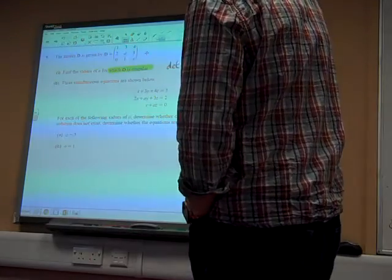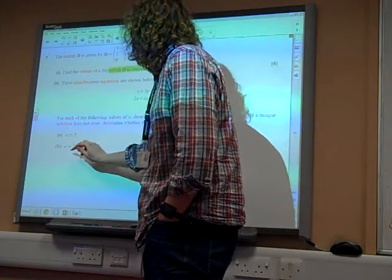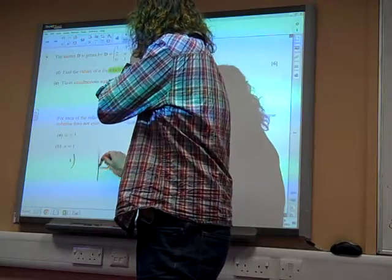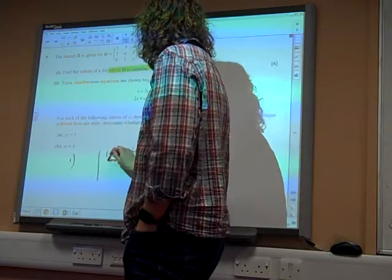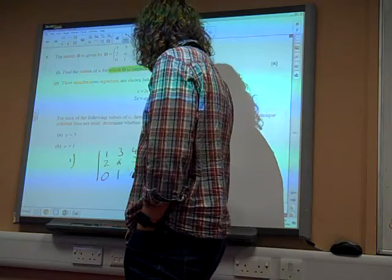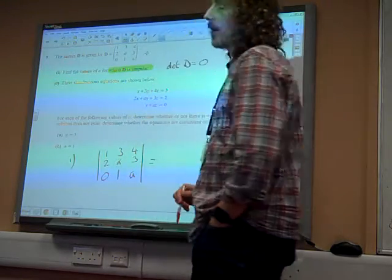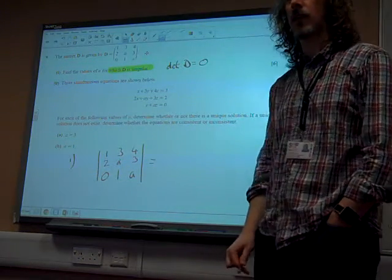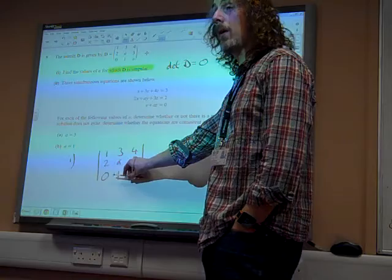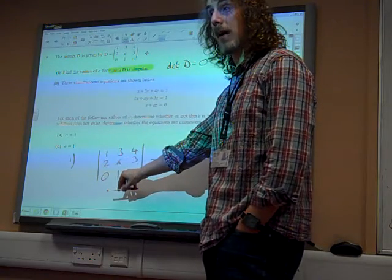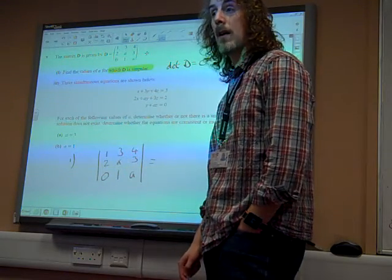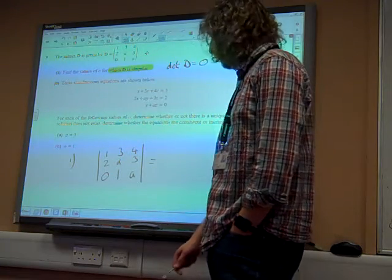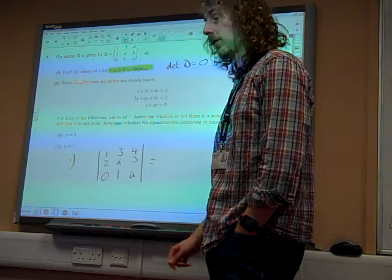So let's work on how to determine it to start with. The matrix was 1, 3, 4, 2, A, 3, 0, 1, A. We know that you can do this with any row or column that you like. So in some ways there is a logic here to taking the bottom row because it's a 0 there and that makes our calculations a little bit easier. I know that most people wouldn't do that. Most people would just play it safe and go with the top row. So I'll do it with the top row.